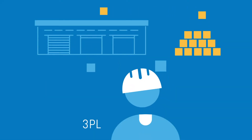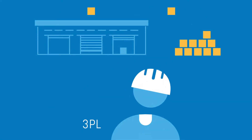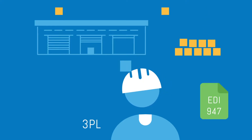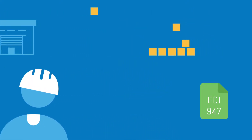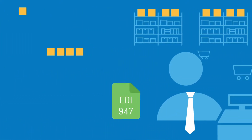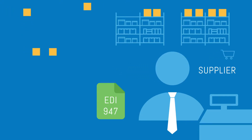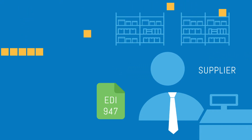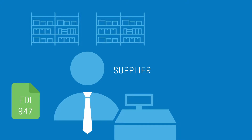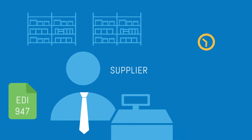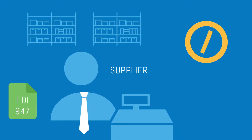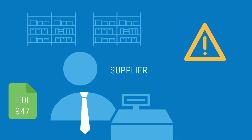Another transaction set you could actually be required to exchange with a supplier, even from the outset, is the 947 inventory adjustment advice. Having enough inventory on hand to meet purchase demand is always important. The 947 is a transaction set a 3PL uses to communicate changes in inventory to a supplier, so shipping delays due to back orders can be avoided. Suppliers generally determine how often they should receive inventory adjustment advice and what events should trigger sending it.